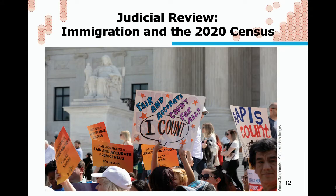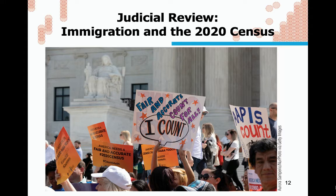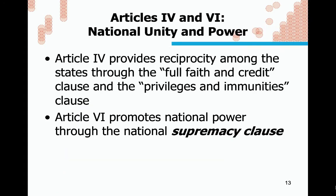The textbook discusses a recent example of judicial review regarding the 2020 census: the Trump administration wanted to include a citizenship question on the census, but the Supreme Court struck it down, ruling the administration's motives were suspicious and contrived. Judicial review is definitely a real and important power — we'll talk more about it when we get to the section on the court system.